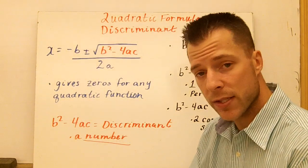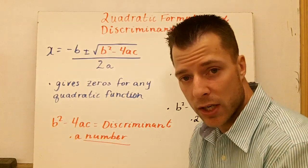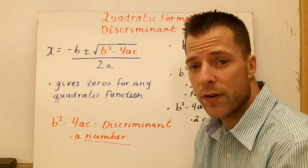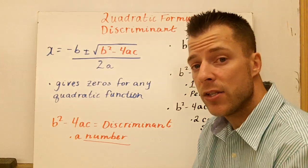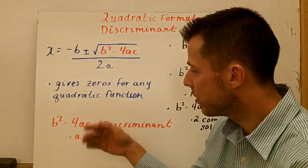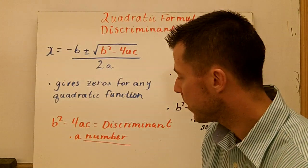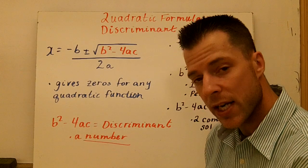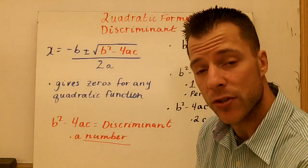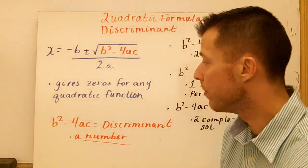Later on, when we get into polynomials, we'll learn something about the powers, but the most solutions a quadratic function can have is 2, and as few as 0 real solutions. The Quadratic Formula gives the zeros for any quadratic function. The discriminant is just a number, and that number tells us something. There are three options for a number: a positive discriminant, a negative discriminant, and a zero discriminant.